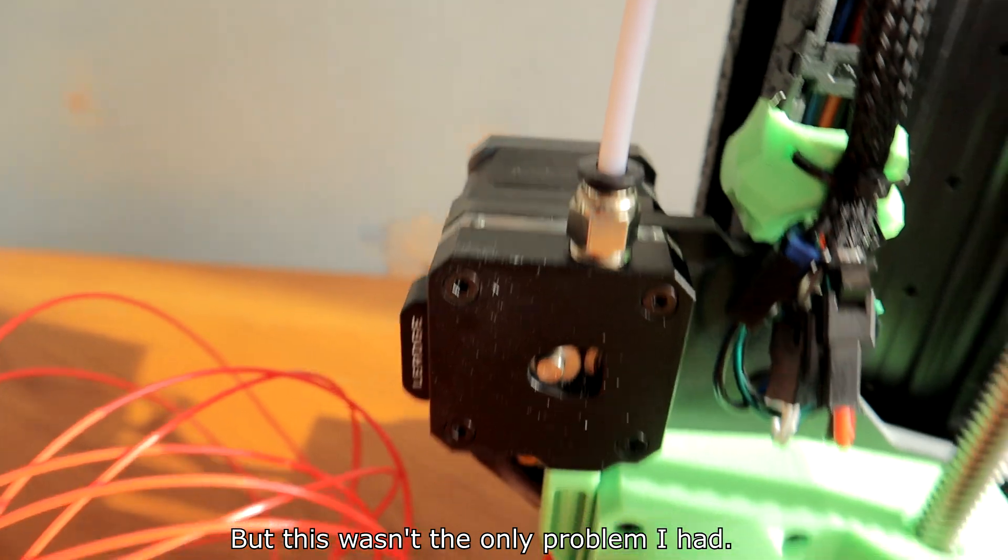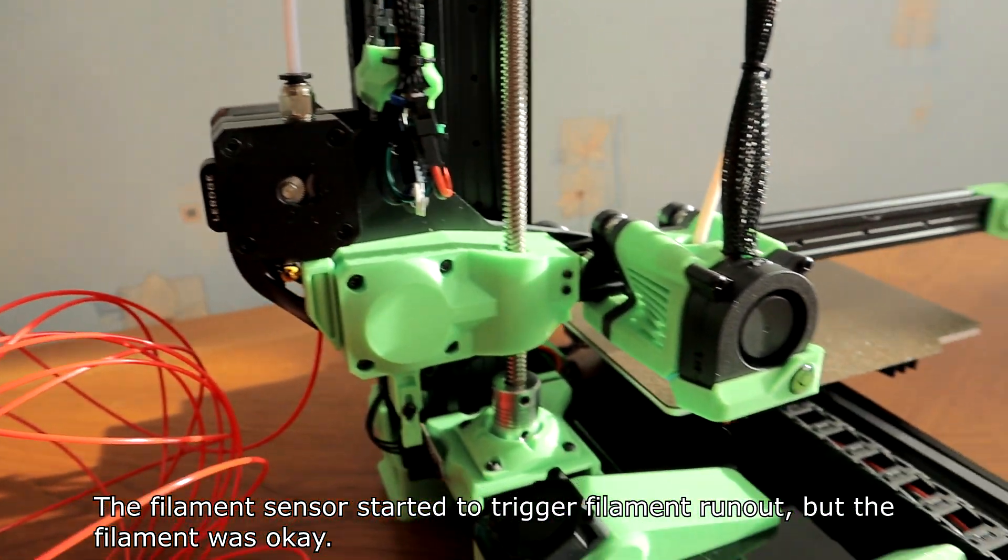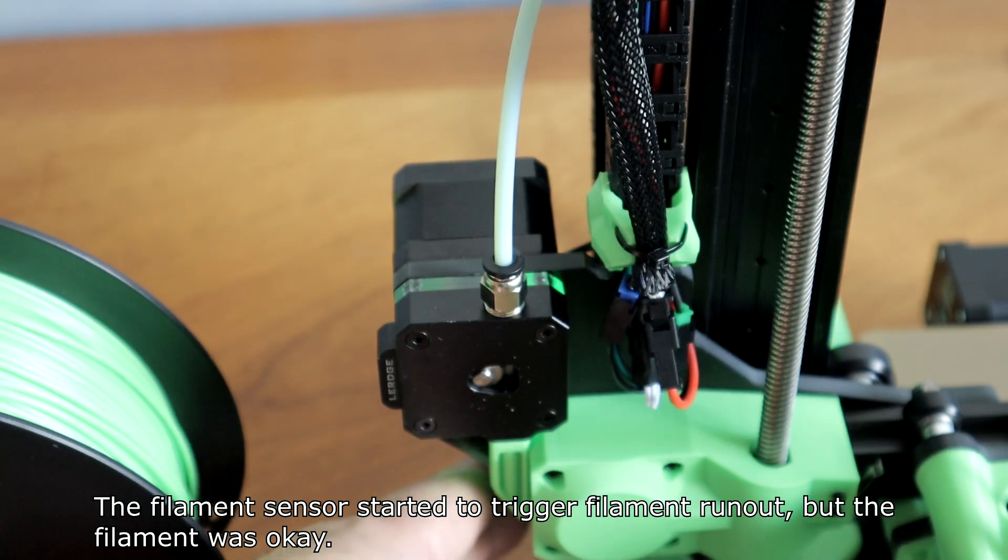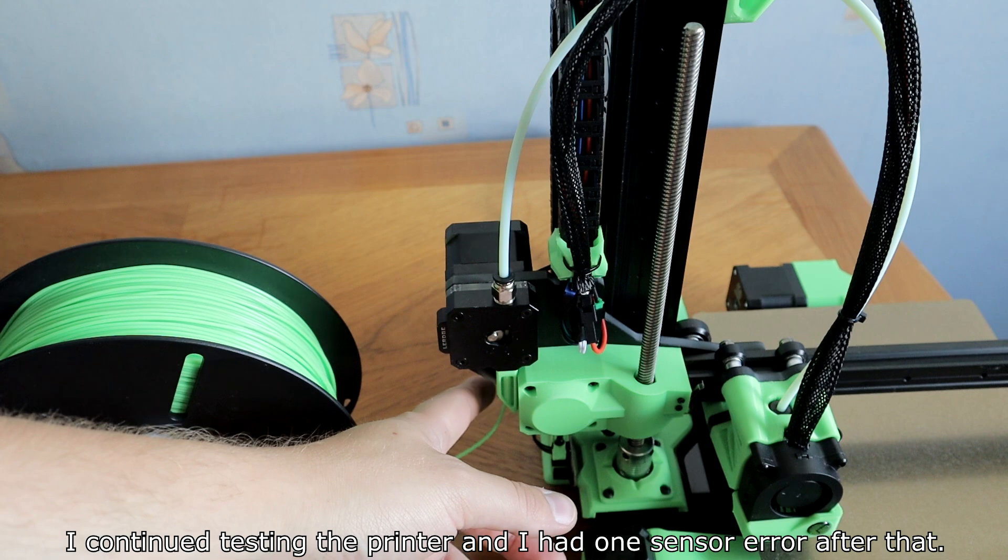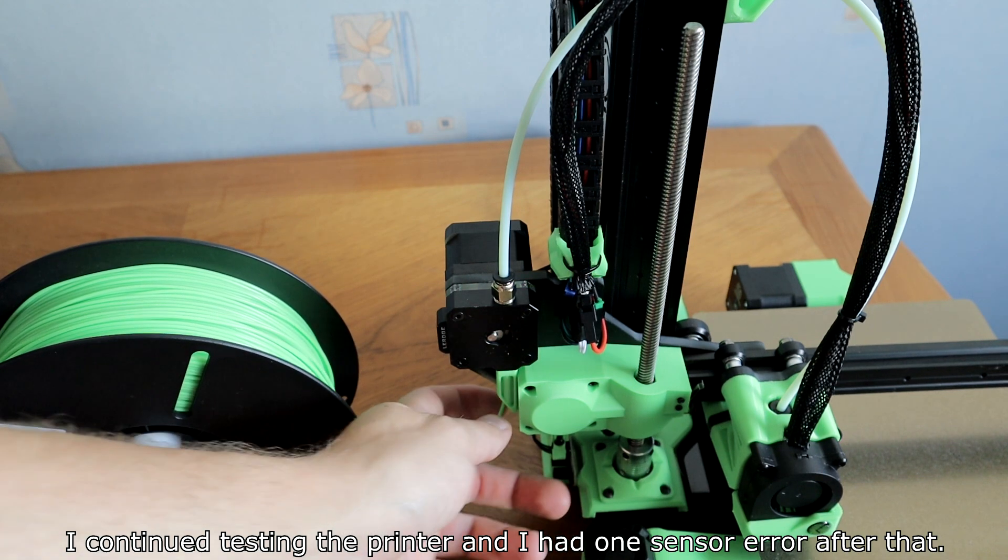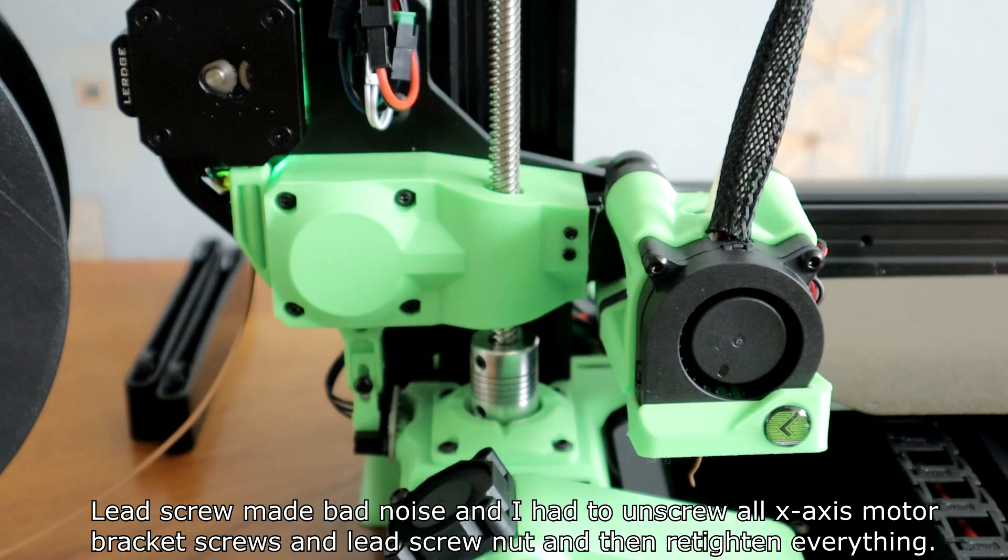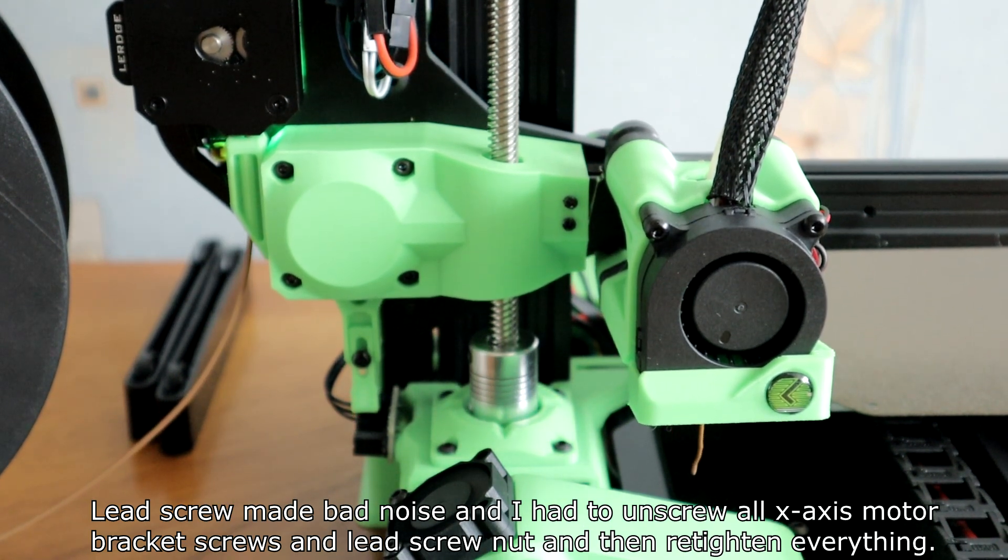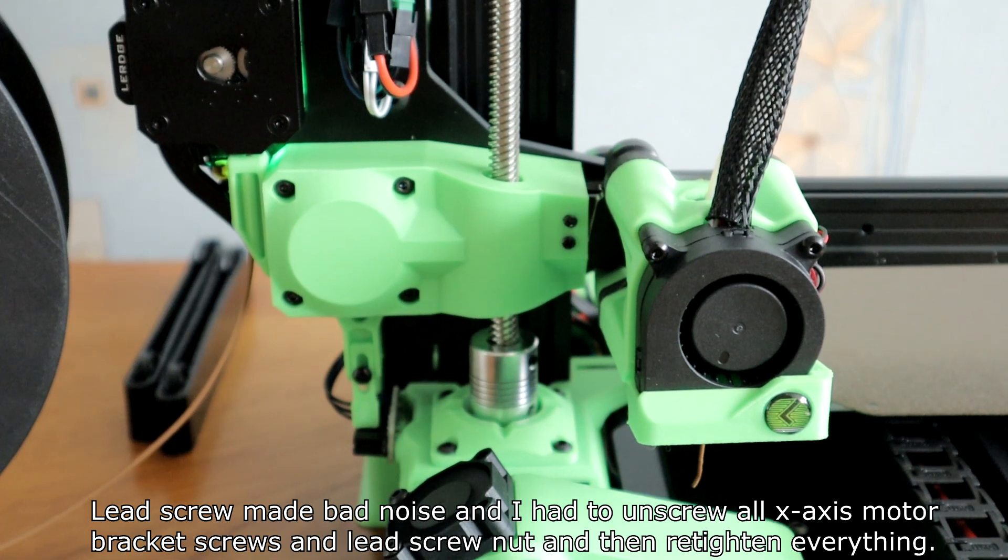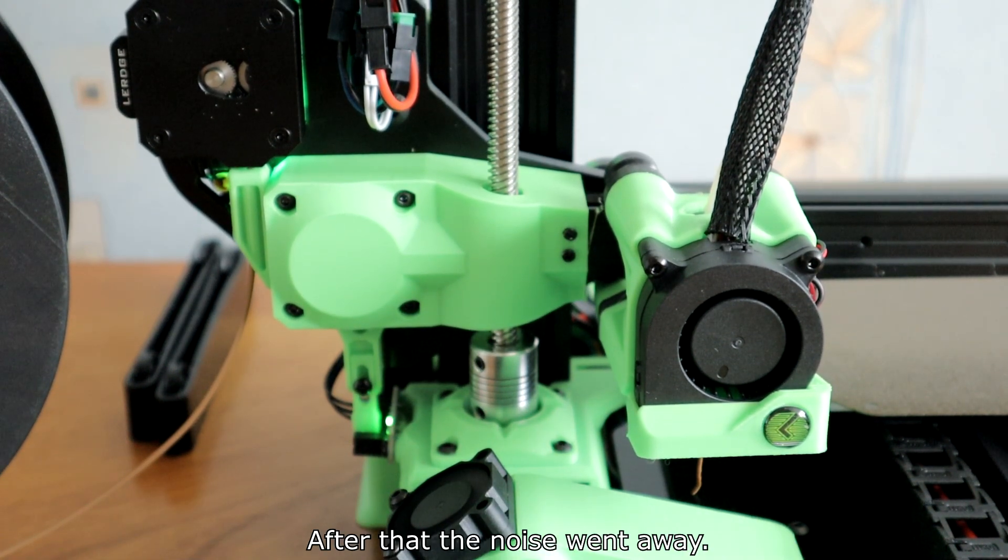But this wasn't the only problem I had. The filament sensor started to trigger filament runout, but the filament was okay. If I moved the filament, it turned on and off. I took it apart, but didn't see any problems there. I went to continue testing the printer and I had one sensor error after that. Lead screw made bad noise and I had to loosen Z-axis motor, bracket screws and lead screw nut, and then re-tighten everything. After that the noise went away.